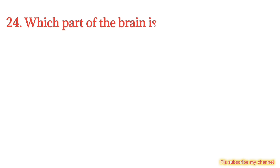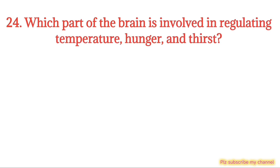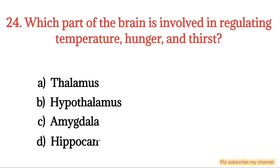MCQ number 24. Which part of the brain is involved in regulating temperature, hunger, and thirst? Option A: Thalamus. Option B: Hypothalamus. Option C: Amygdala. The right option is Option B.